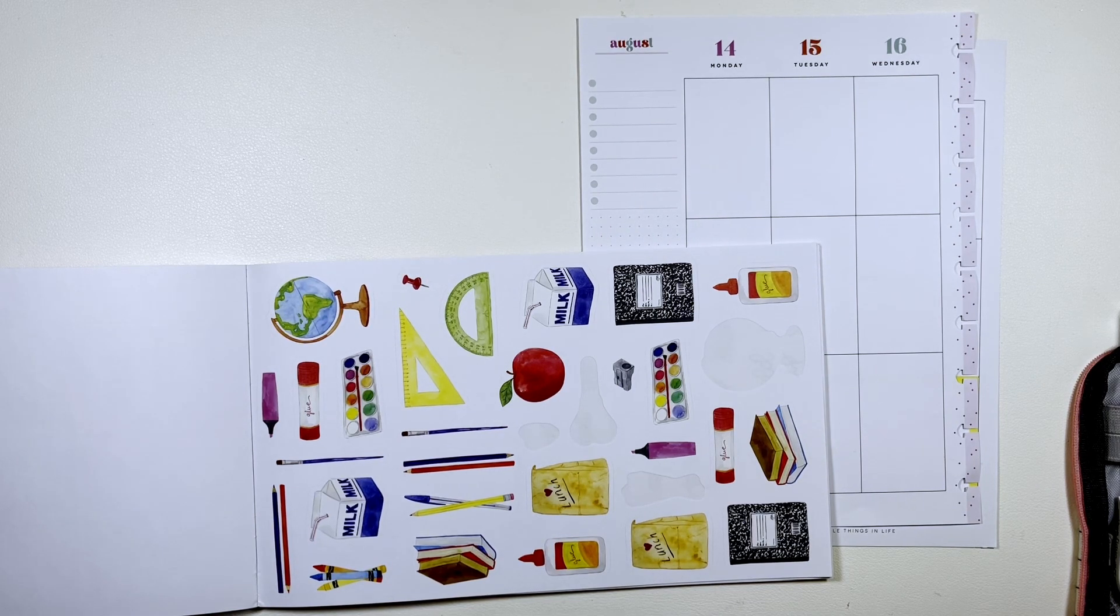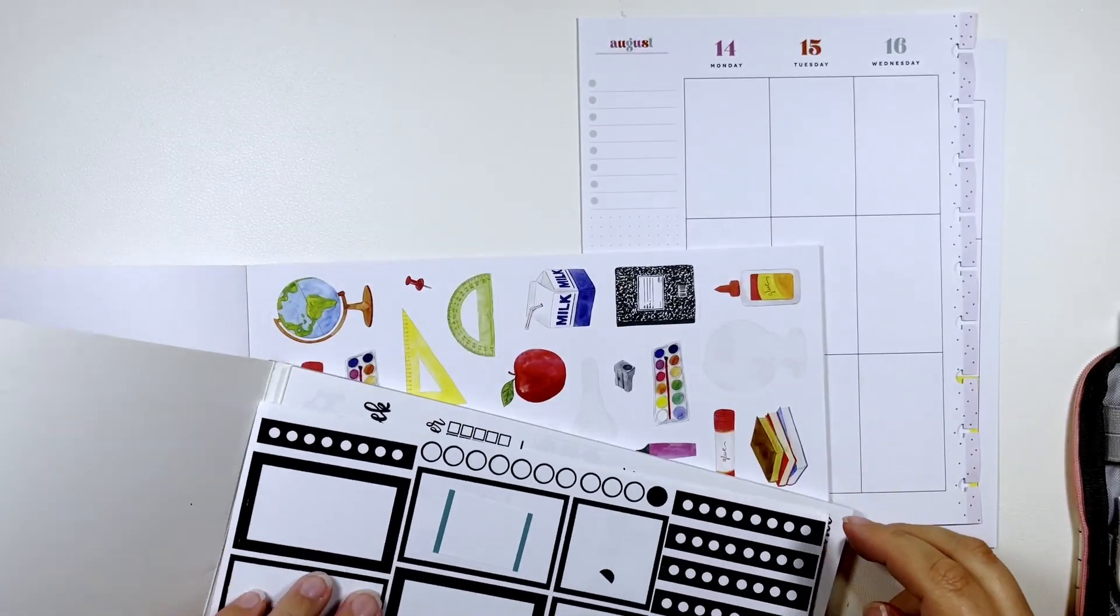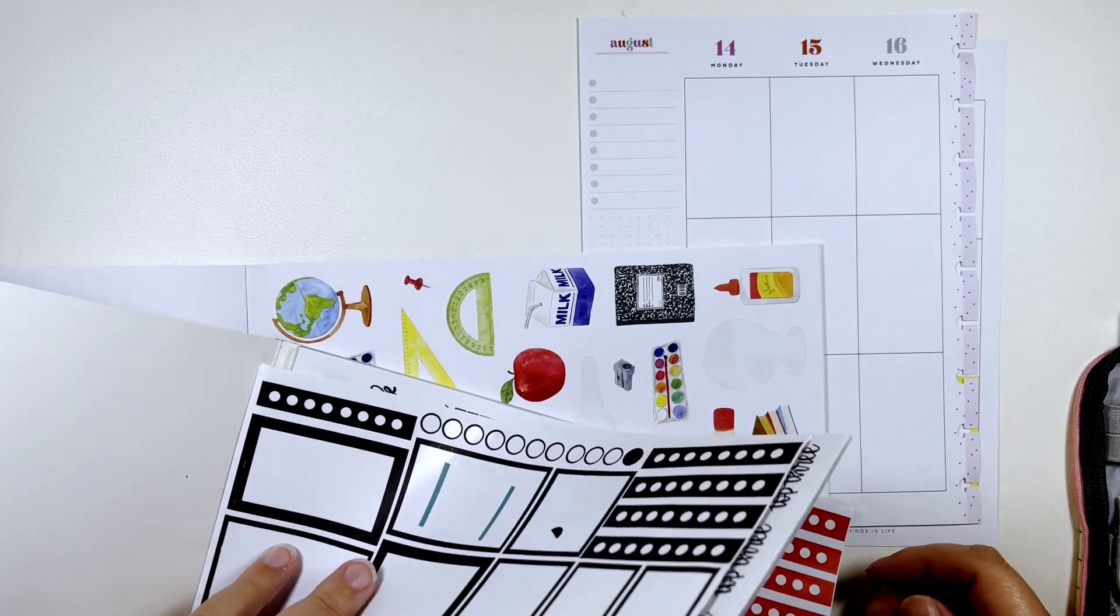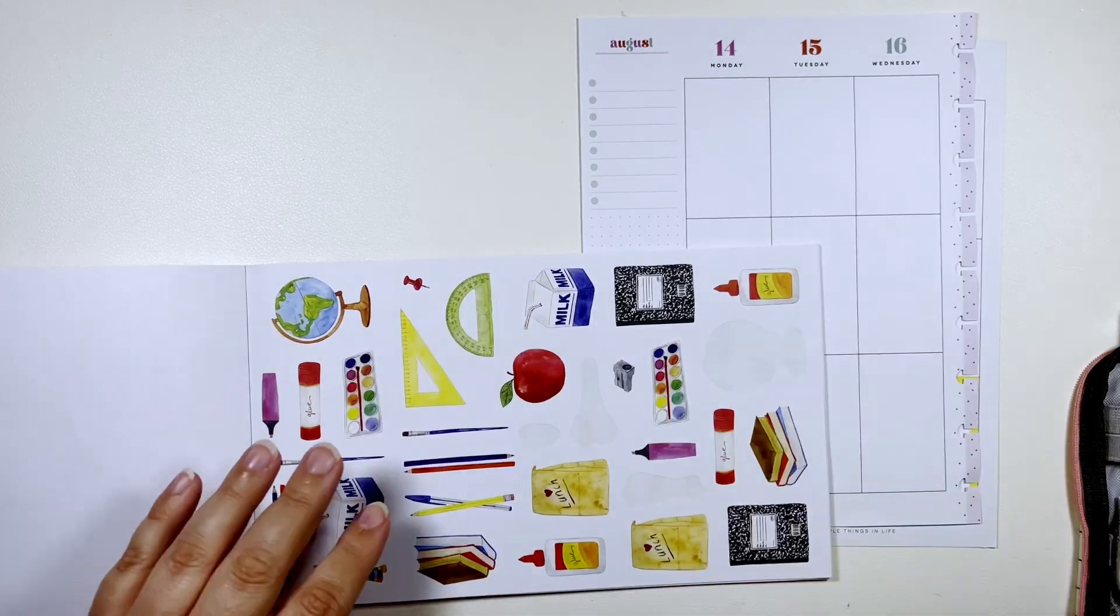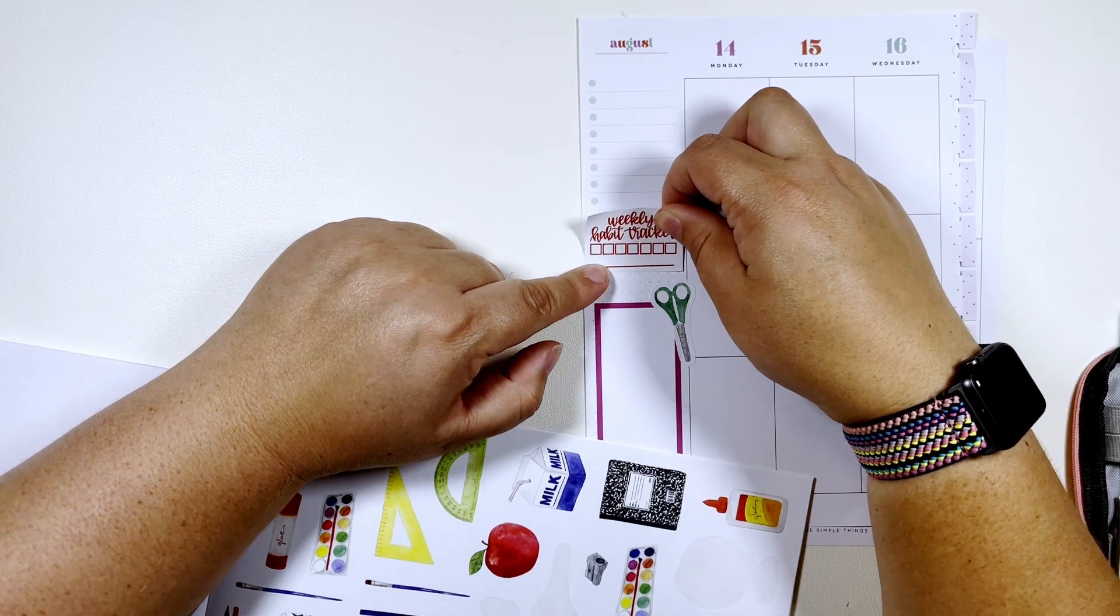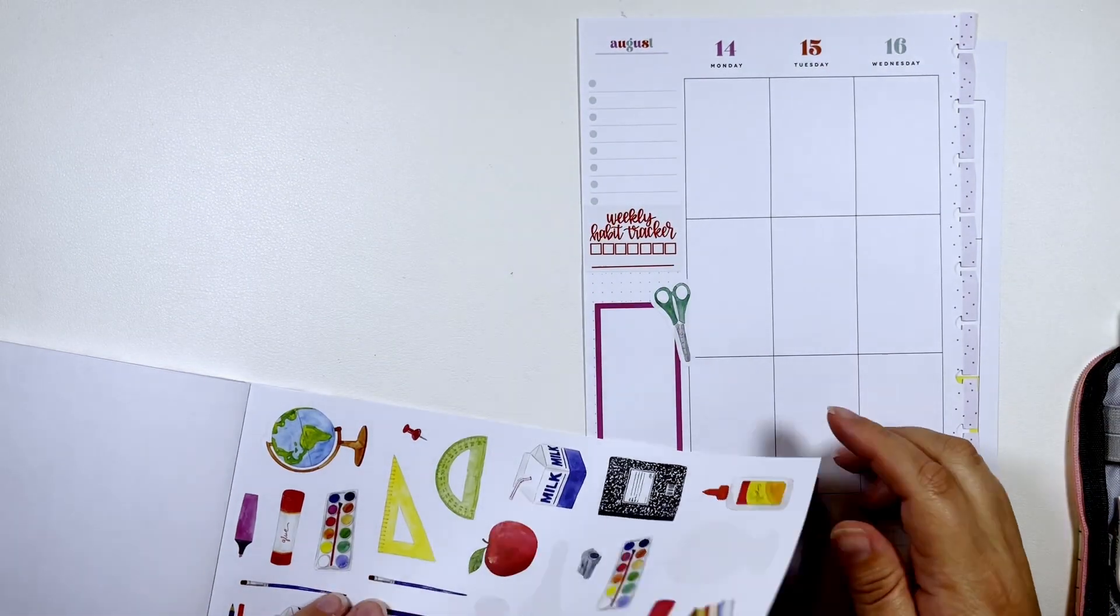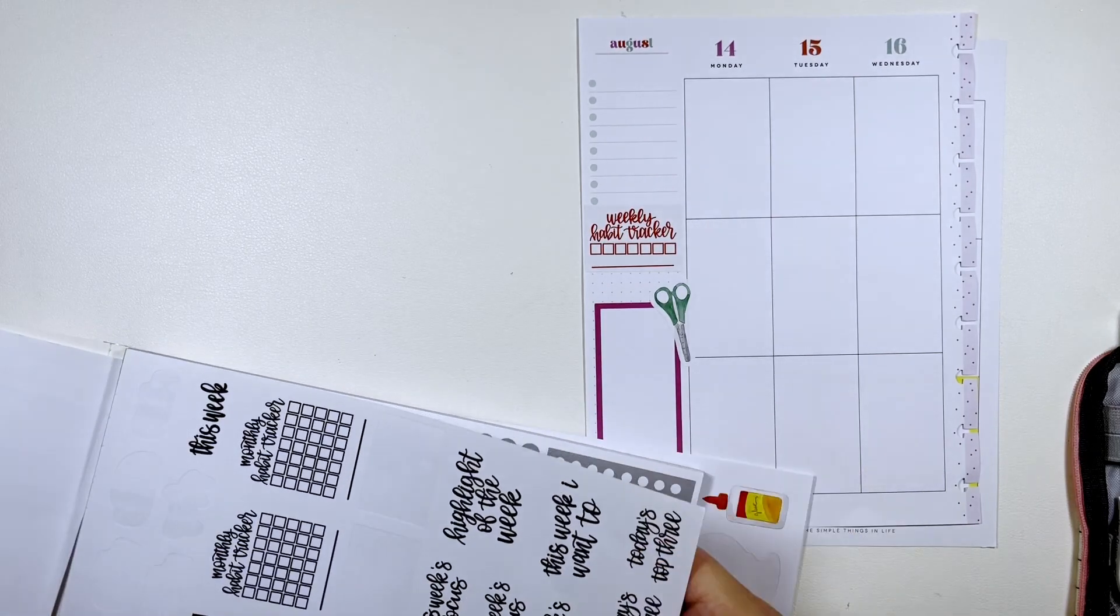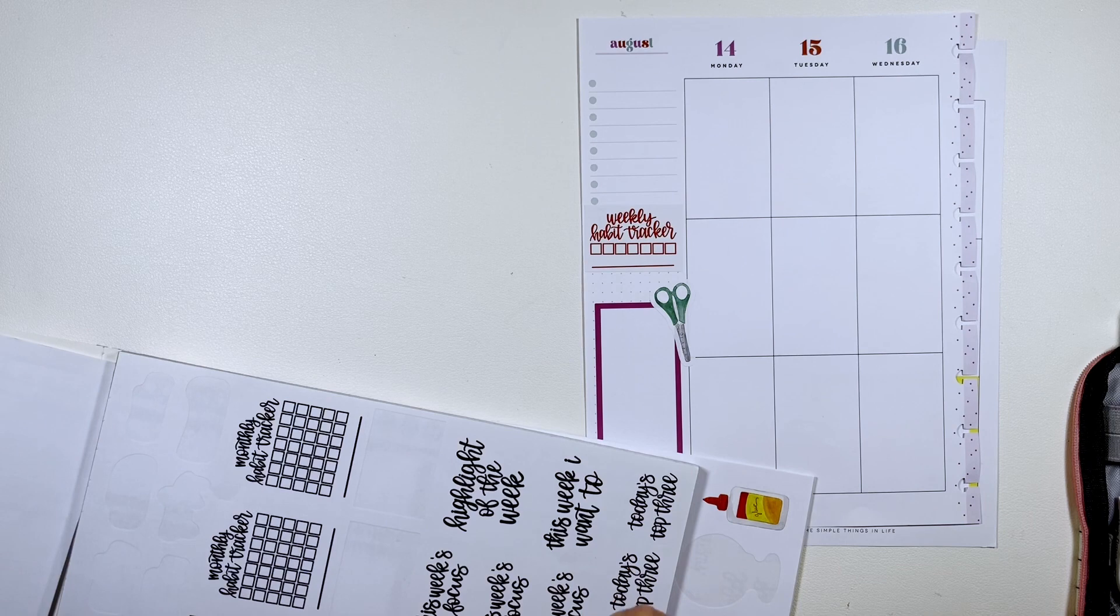I'm going to grab Rainbow Basics for a habit tracker and a 'this week' sticker.